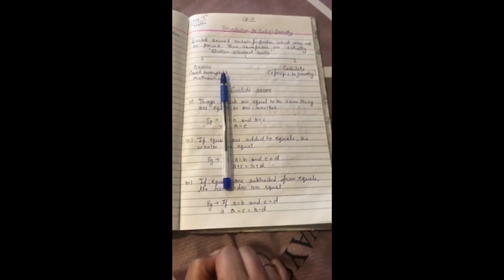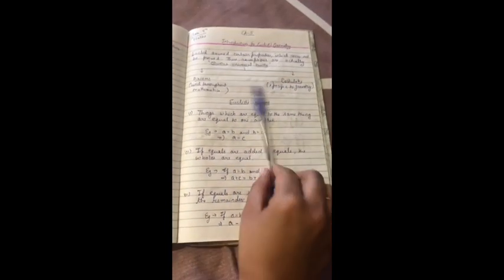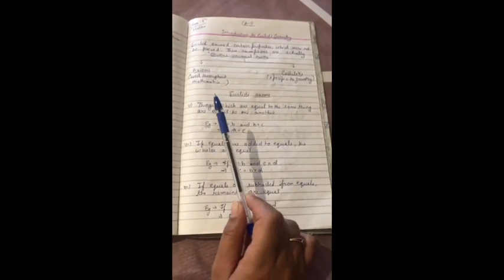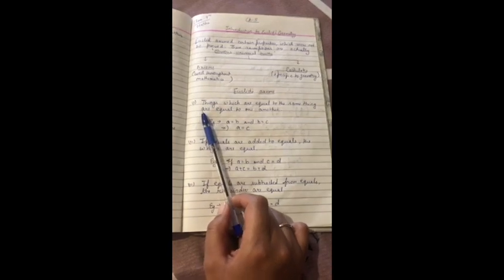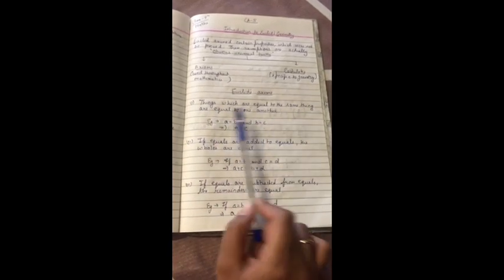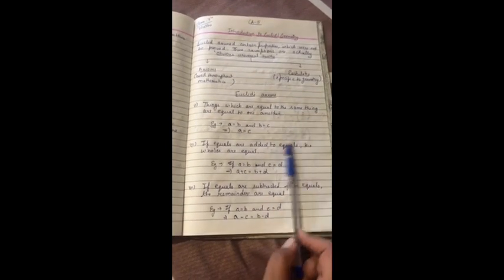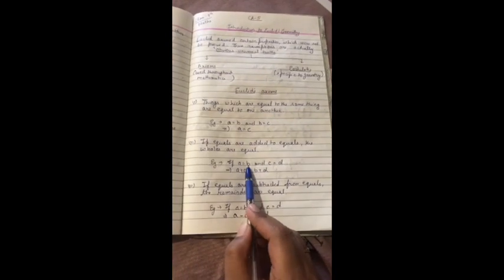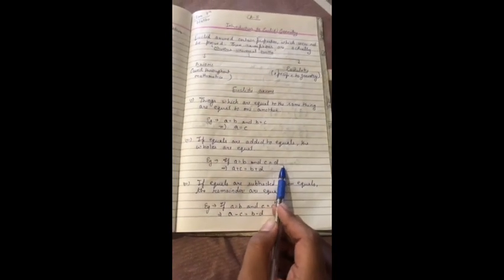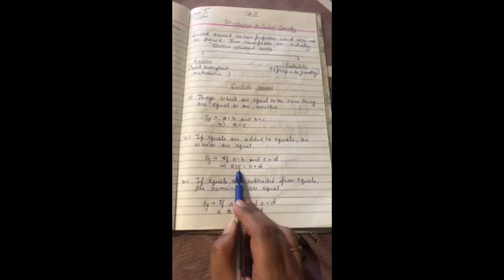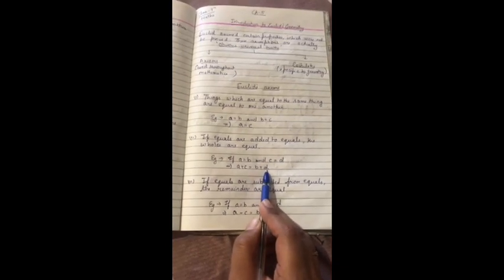Suppose this is the cost of one pen and there is also one pen, two pens. If I am adding an eraser of the same cost to both sides, the cost of pen and eraser is equal to the cost of another pen and eraser. So if A is equal to B and C is equal to D, that means A plus C is equal to B plus D. That is how it works.